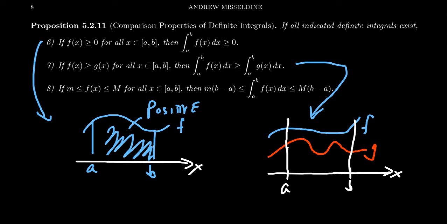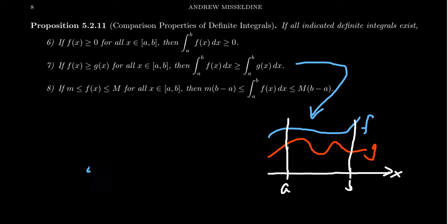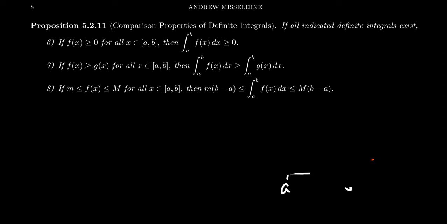And then the last condition gives some explanation to what that's going on there. If little m is less than or equal to f of x and capital M is greater than or equal to f of x for all x's there, then we're going to get that little m times b minus a is less than or equal to the integral, which is less than or equal to M times b minus a. This right here, 8 is just a special case of 7 right here.